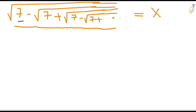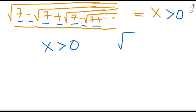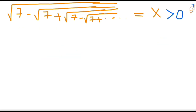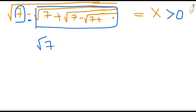Let's observe the question. We have square root of 7 minus square root of 7 plus square root of 7 minus, and so on. If you observe closely, we can say that X is greater than 0, because the square root of any number is always greater than 0. That's why our X value is greater than 0.